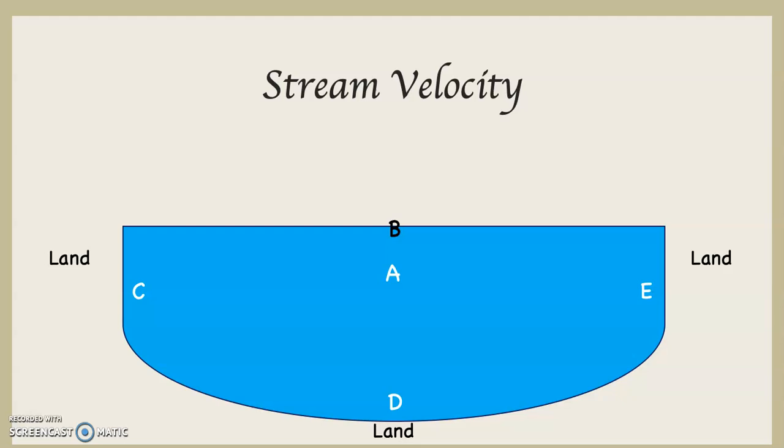How about we take a quick look at stream velocity. What I constructed there for you is a bisected stream. In other words, the river itself is cut in half and the water is flowing at you.